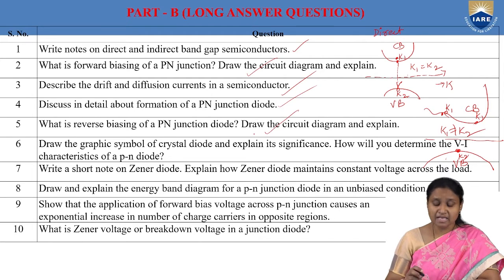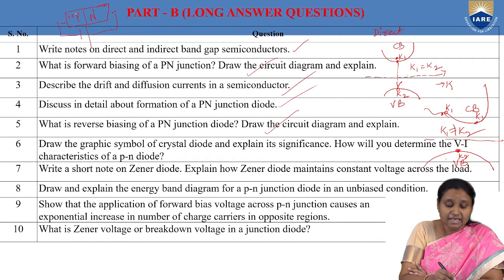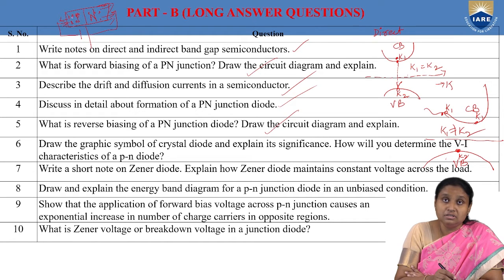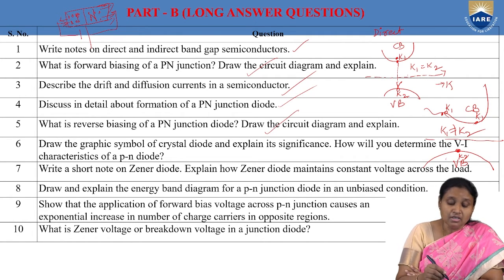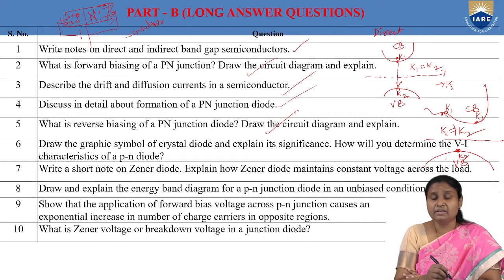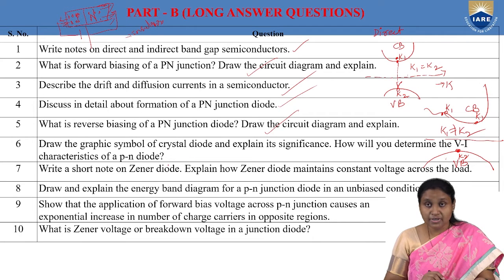Drift current is produced when charge carriers are made to move by an applied external electric field. In reverse biasing, p-type is connected to negative terminal and n-type to positive terminal. Holes get attracted toward the negative terminal and electrons toward the positive terminal — both move away from the depletion layer, so the depletion layer increases. During reverse biasing, the diode acts as an insulator with only a small leakage current due to minority charge carriers.